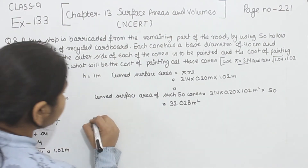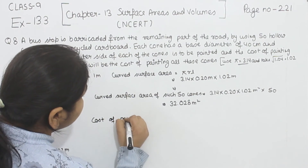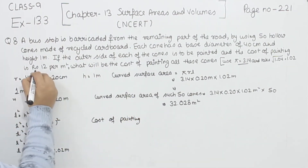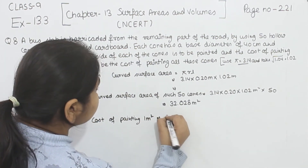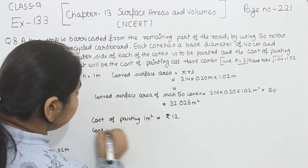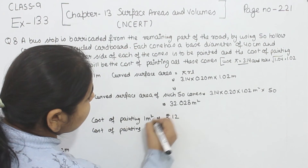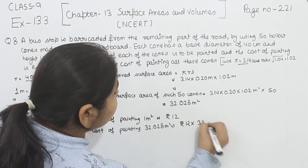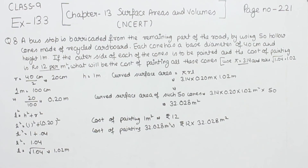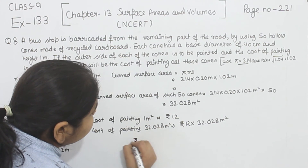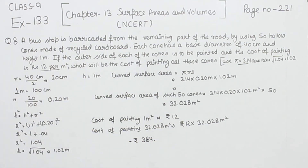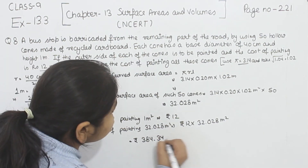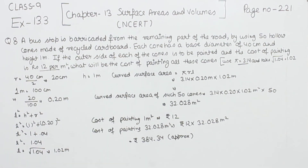Now we have to find the cost. The cost of painting is given as rupees 12 per meter square, so 1 meter square costs rupees 12. We have to find the cost of painting 32.028 meter square. Multiplying, the cost of painting comes out to rupees 384.34.